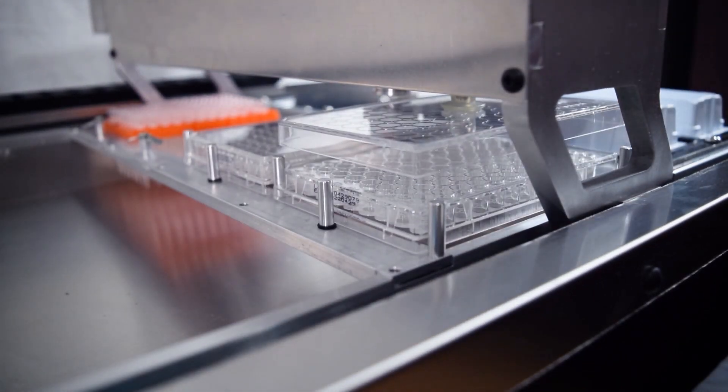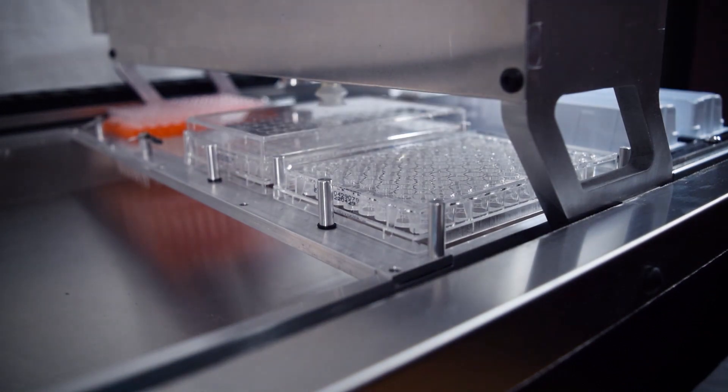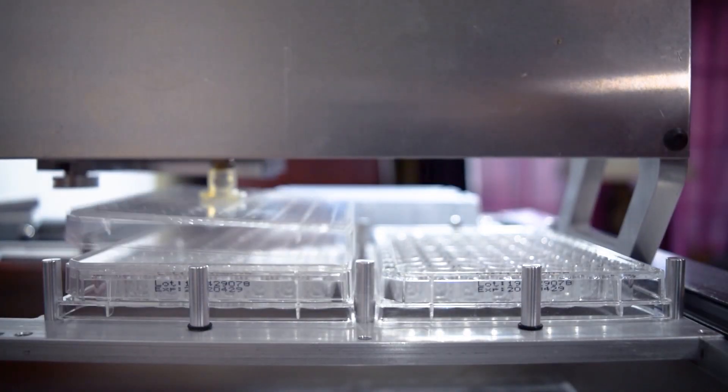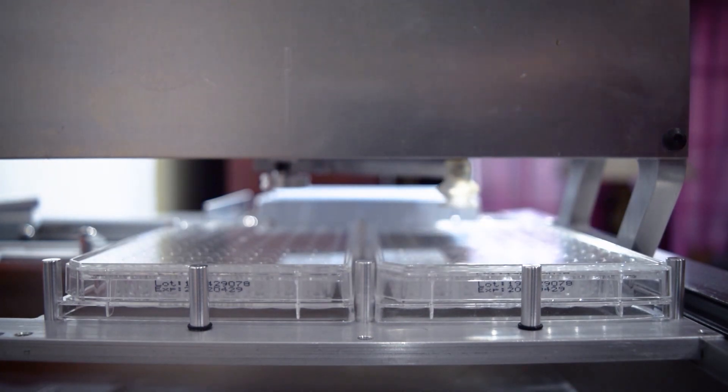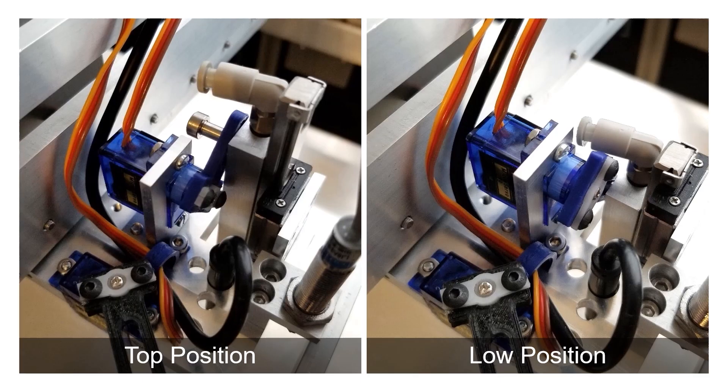Lid removal and replacement are accomplished using a vacuum gripper. The vacuum gripper is driven by a small vacuum pump and the suction is released using a solenoid valve which opens the vacuum line. Here we can see the mechanism which actuates the vacuum cup. A small servo is used for motion and a miniature linear rail guides the motion.